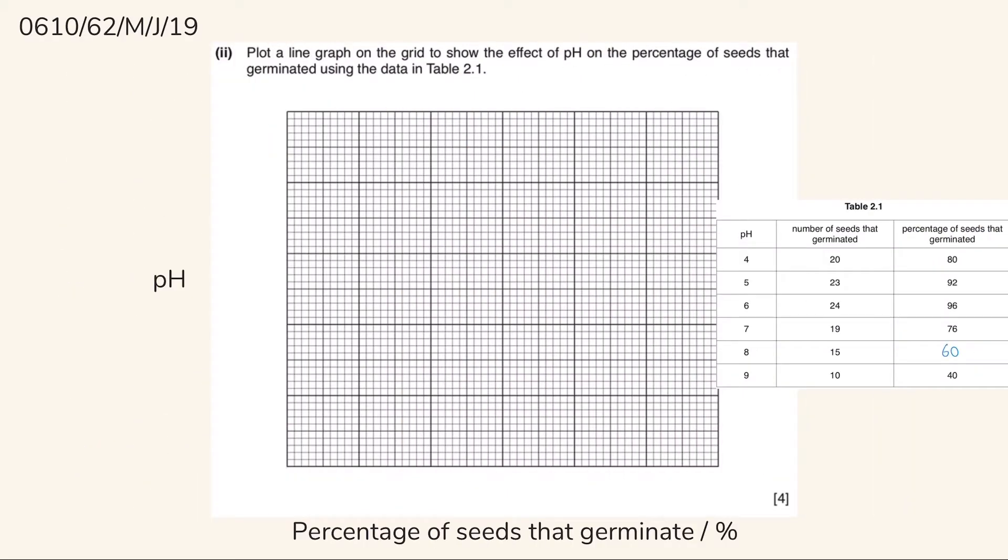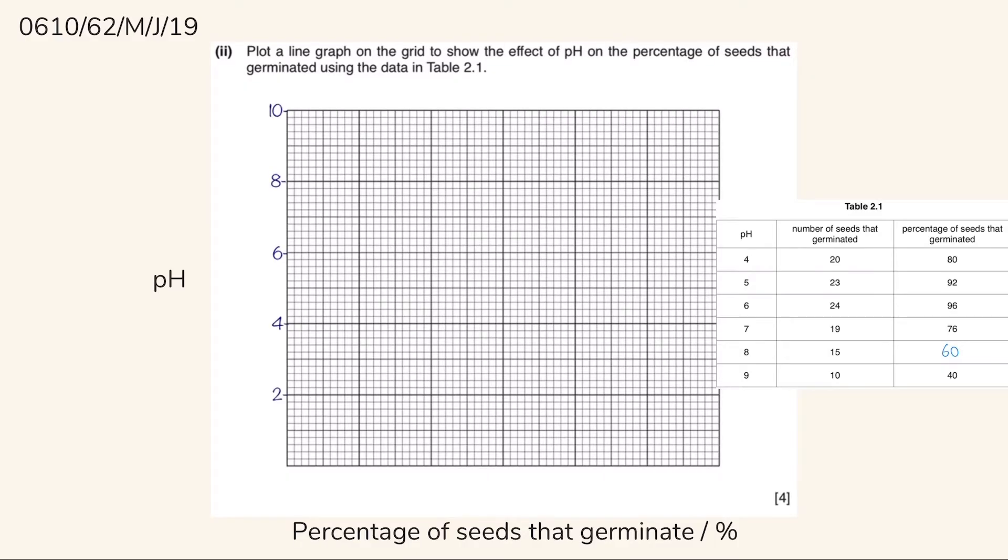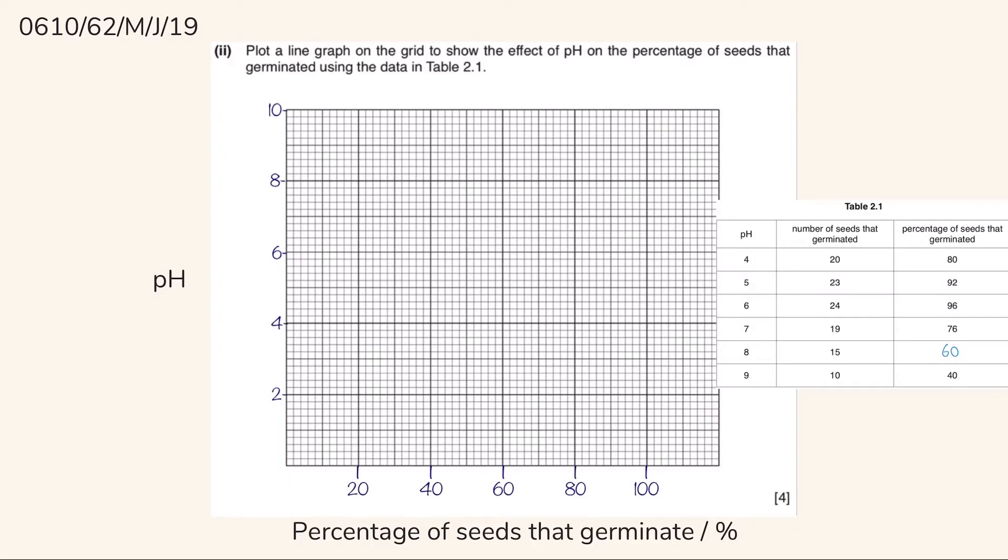Now, we are ready to solve part 2, which is a graph question. First of all, we should add the labels. Let's put pH on the y-axis and percentage of seeds that germinate on x-axis. Then we should add the values for y. So over here, each 10 small squares are going to be the multiples of 2. And for the x-axis, each 10 small squares will equal to the multiples of 20.